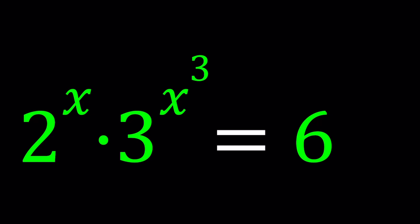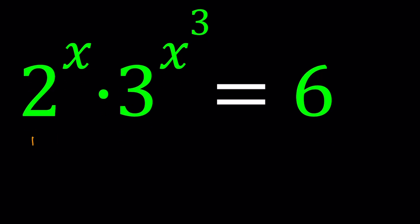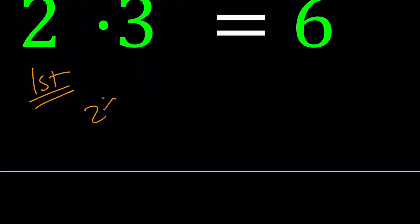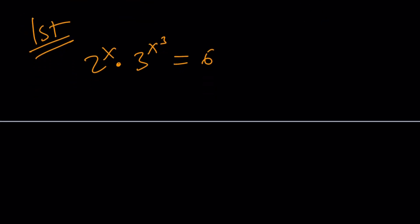I'll be presenting two methods and let's start with the first one. So for my first method, I'm going to go ahead and ln both sides. If you ln 2 to the x times 3 to the x cubed, then you get ln 6.